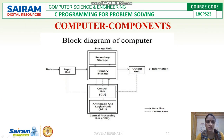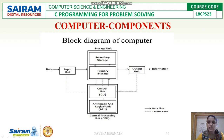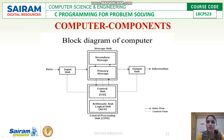Coming to the computer components, we have a block diagram of a computer with an input unit, a central processing unit, and an output unit. Data flows from the input unit into the CPU where it is processed, and the resulting useful information is output through the output unit.